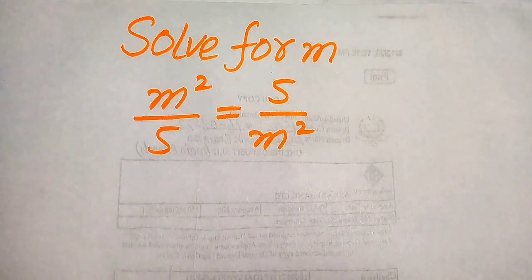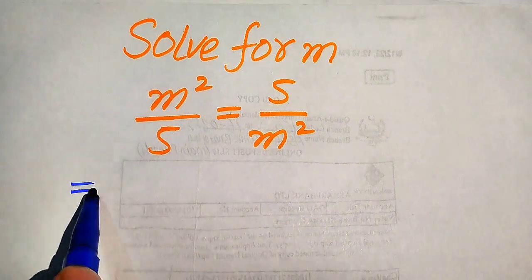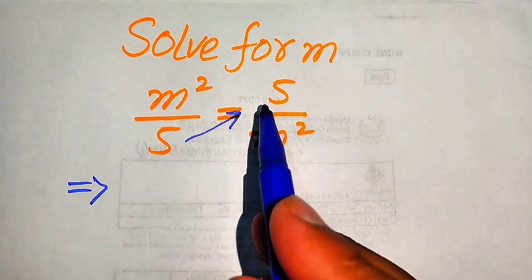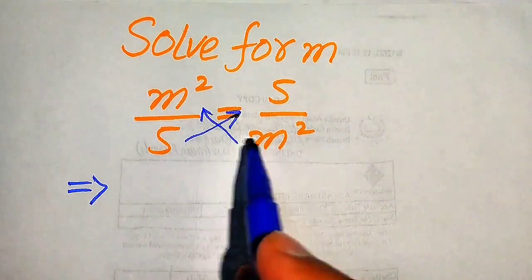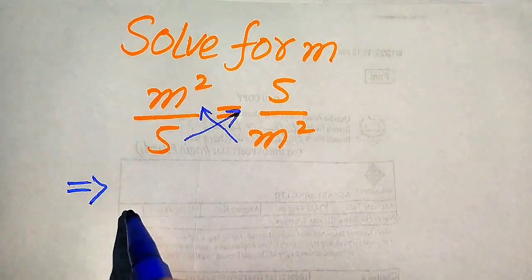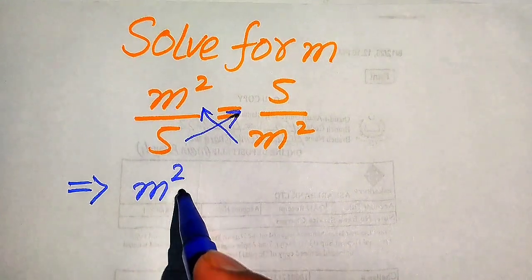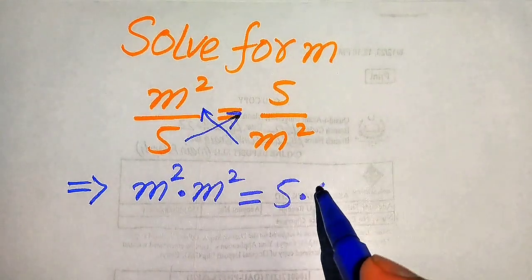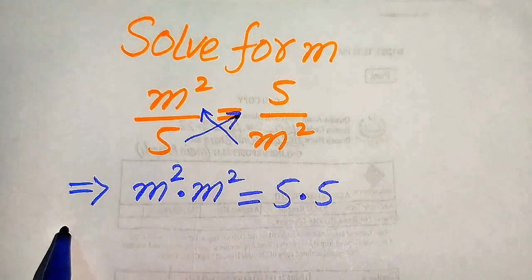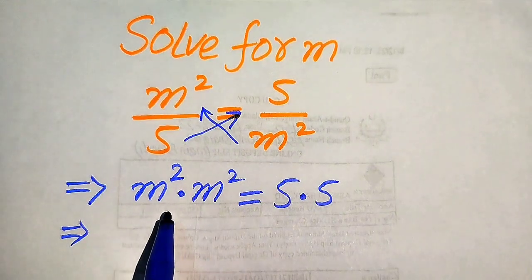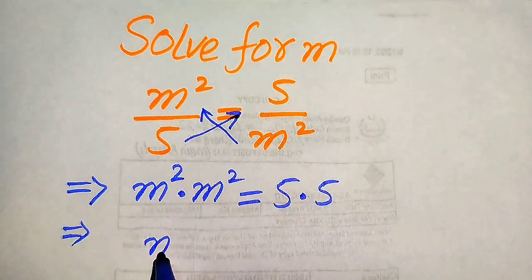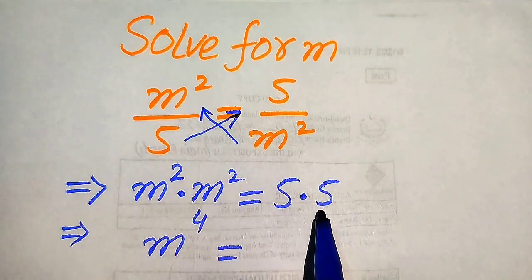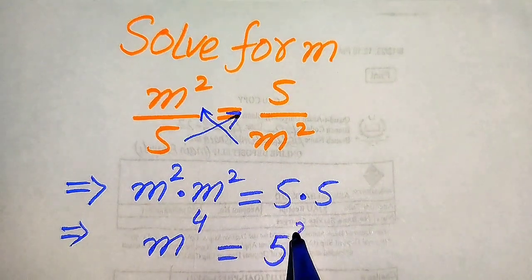The very first thing we are going to do is cross multiply the terms. We multiply this 5 with this 5 and we multiply this m square with this m square. After multiplication, it will be written as m square multiplied by m square equals 5 multiplied by 5. The bases of these two terms are the same, so we add the exponents: 2 plus 2 becomes 4, and we write 5 times 5 as 5 square.